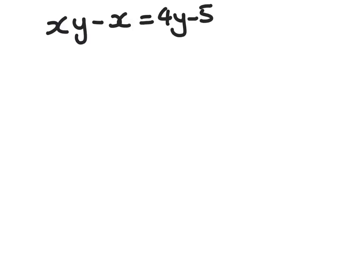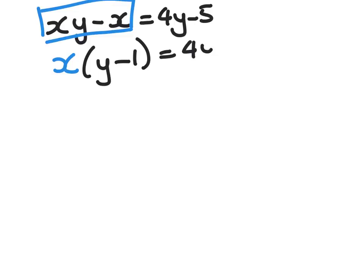Remember our goal is to get x on its own. So we're now going to factorize this side. So we'll get x into y, take away 1, equals 4y minus 5. Finally, we divide both sides through by y minus 1. And here's what we end up with.